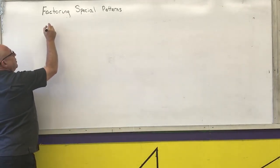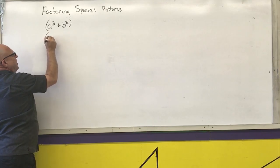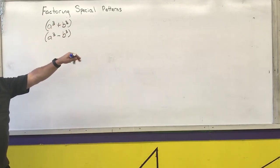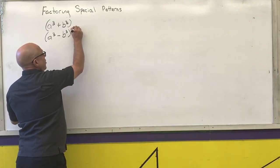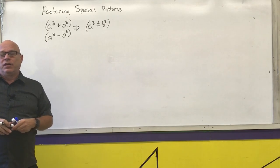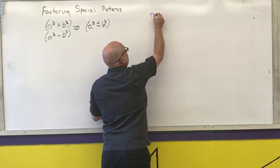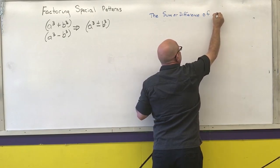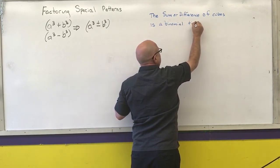The other pattern we have is the sum of cubes or the difference of cubes. If I have a perfect cube plus a perfect cube, or a perfect cube minus a perfect cube, there is a special pattern for factoring that. I'm going to write it as a cubed plus or minus b cubed, and the sum or difference of cubes factors as a binomial times a trinomial.